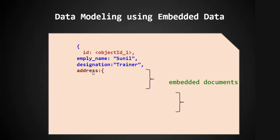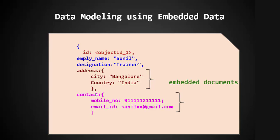Now we want to add address data as well. The address will have values like city name and country name. We embed an address document inside the main document — for example, address: { city: 'Bangalore', country: 'India' }. We can also embed another document for contact details containing a mobile number and an email ID. So the main document has the employee name, designation, one embedded address document, and one embedded contact document.